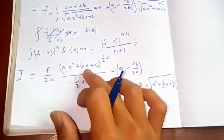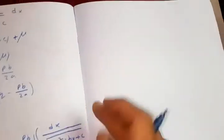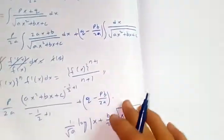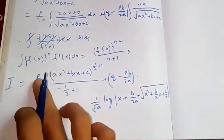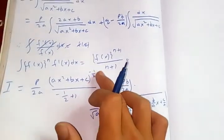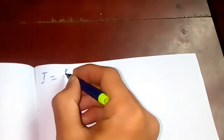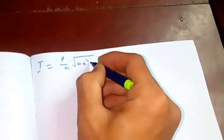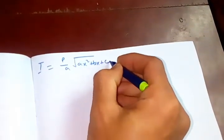Just simplify this one later. This will become, after this power and denominator after simplify, then you will get like this: p upon a square root of ax square plus bx plus c, plus